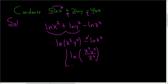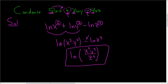So to recap: we started off by knowing that we had to use the product rule and the quotient rule. But the problem was we had constants in front of the logs. So we brought those upstairs using the power rule. Then we used the product rule, and then to go from there to the final answer, we used the quotient rule.